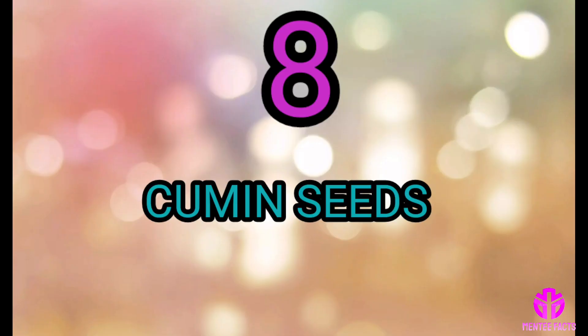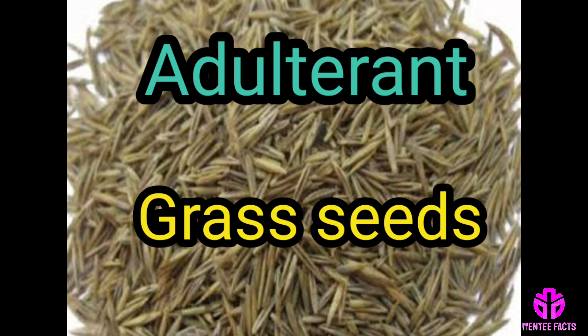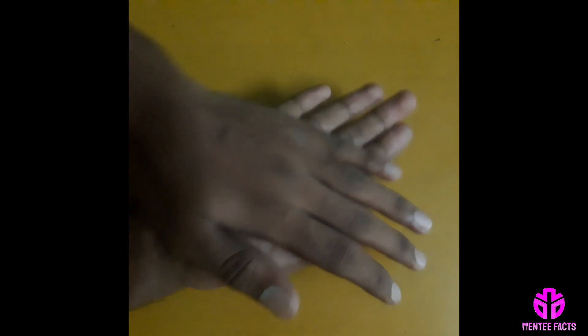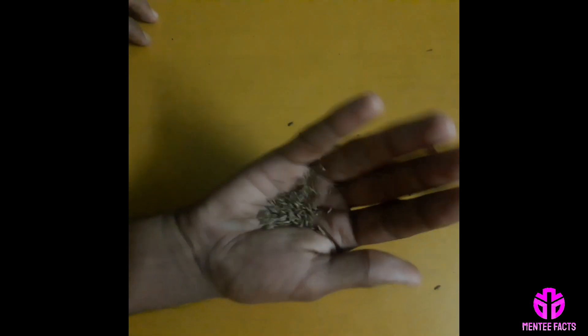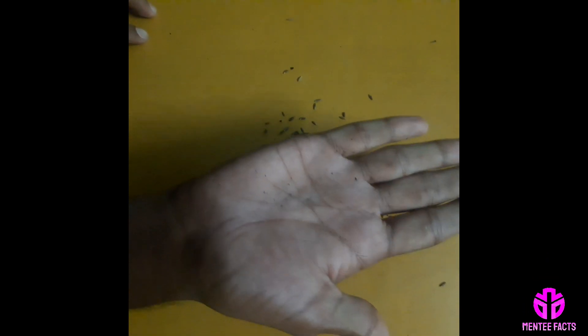Detection of food adulterant in cumin: the adulterant is grass seeds colored with charcoal dust. Rub a small amount of cumin seeds on your palms. If the palms turn black, adulteration is indicated.